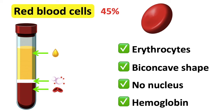They also contain a protein called hemoglobin. This is a transport protein. It helps to carry oxygen from the lungs to the rest of the body. This is ultimately what makes blood red. Carbon dioxide is then returned from the body to the lungs to be exhaled.